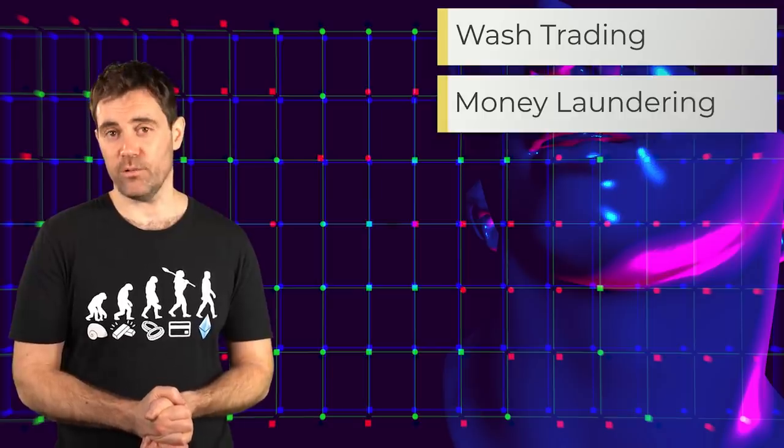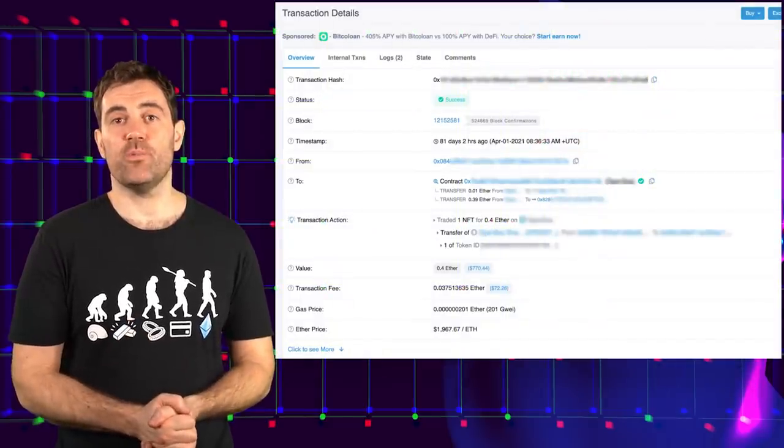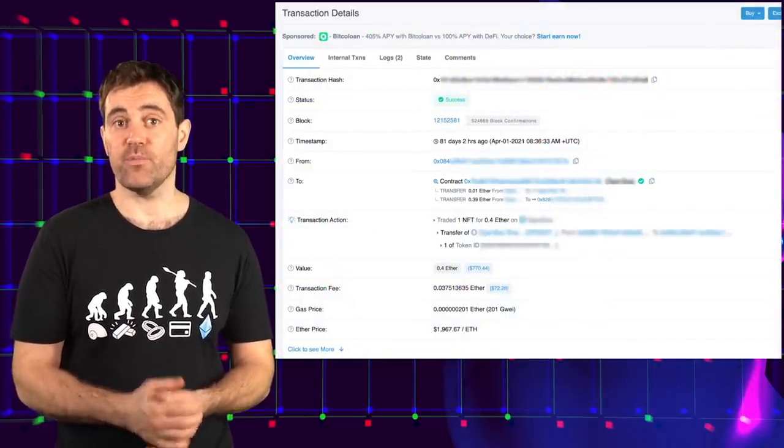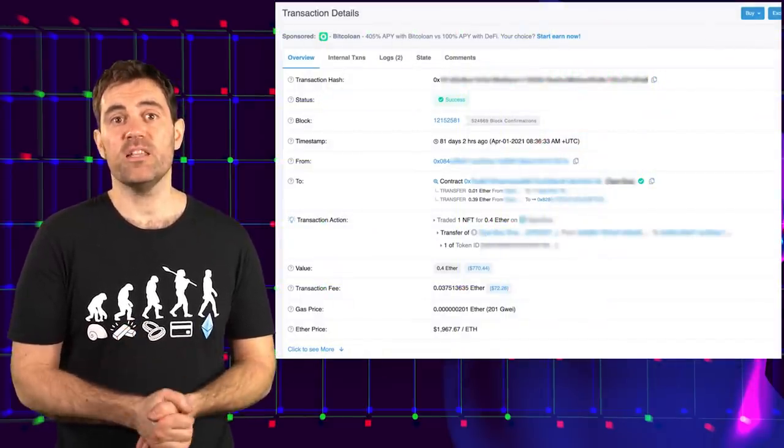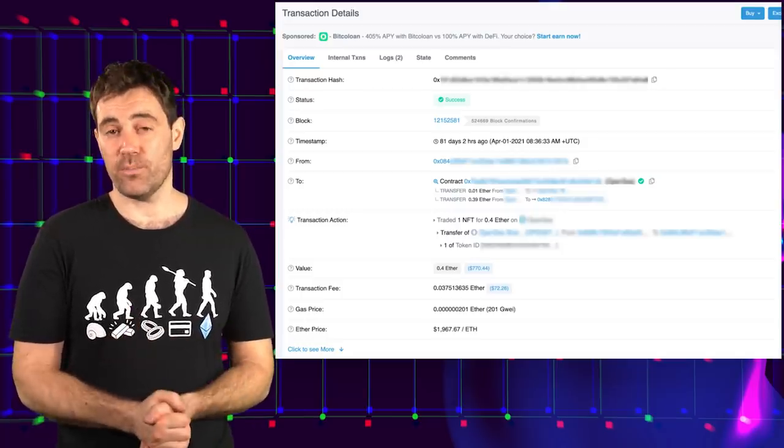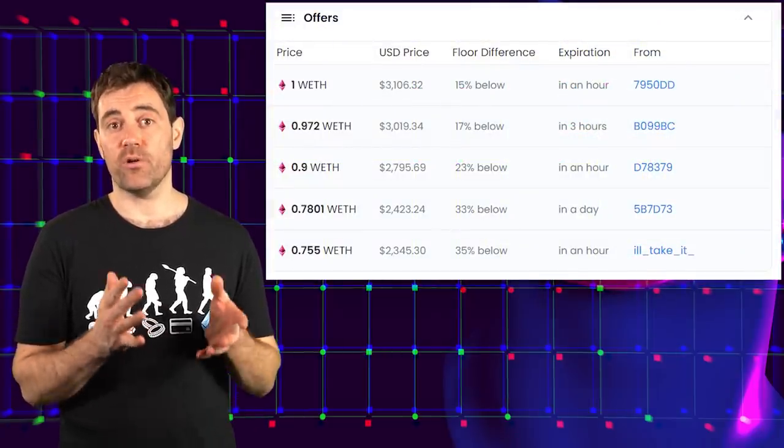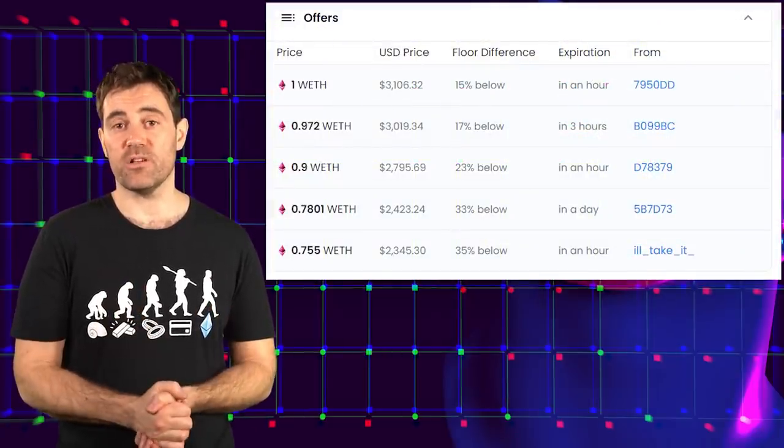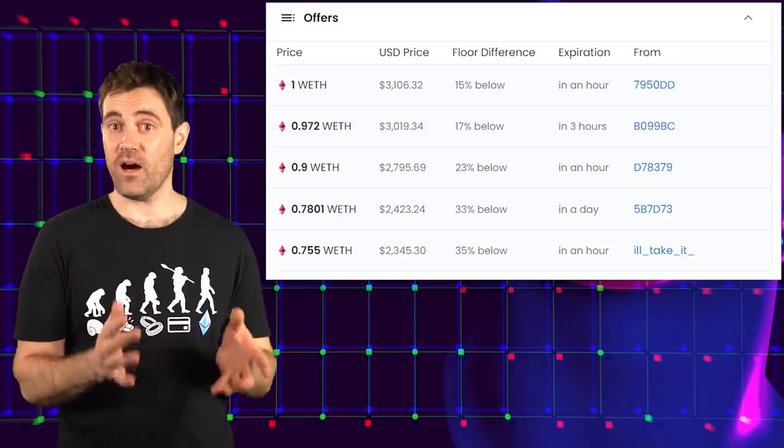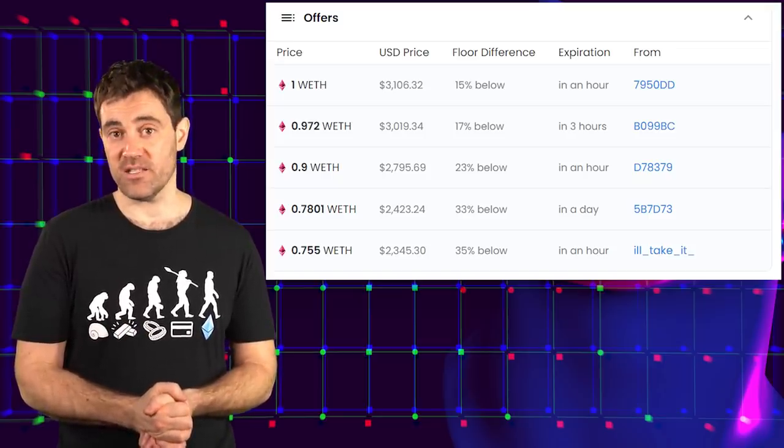Chainalysis divided illicit activity with NFTs into two categories, wash trading and money laundering. In the context of NFTs, wash trading is when someone buys an NFT from themselves with other crypto wallets they operate to make it look like their NFT is more valuable than it is, and then sell it for a profit. This is because the trading history will suggest that there were a bunch of other people who bought and sold the NFT at similar or even higher valuations in the past, causing untrained NFT traders to ape in.